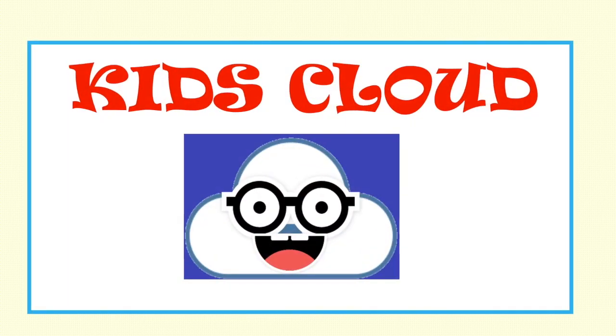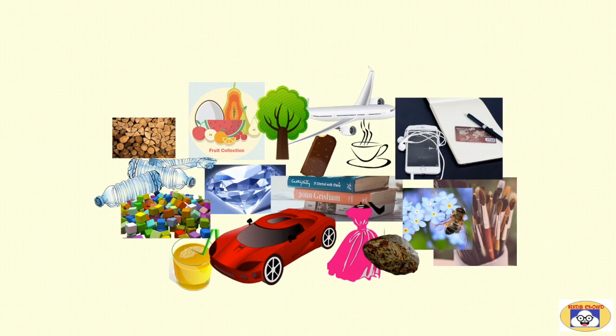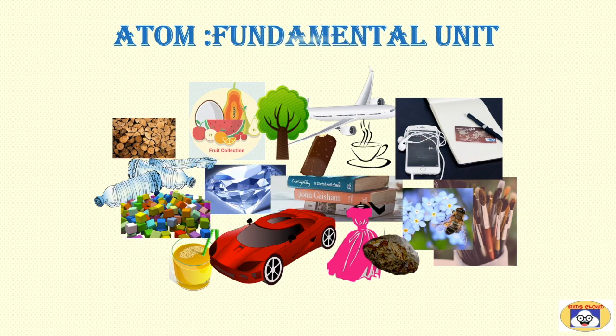Hello, welcome to the channel Kids Cloud. In universe, millions of objects are there. Some of them are liquids, some are solids, while others are in gaseous form. Though these objects are with different sizes and shapes, different colors, different compositions, one thing is common in them. Everything in the universe is made up of atoms, or we can say atom is the fundamental unit of every matter.